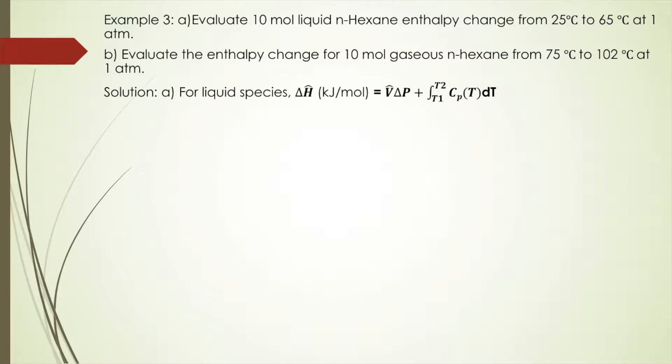For liquid species, specific enthalpy change equals pressure change times specific volume plus the integral of heat capacity from T1 to T2. The pressure change is zero because from 25 to 65 degrees the pressure stays the same. So the change in enthalpy equals the integral of Cp dT from T1 to T2.